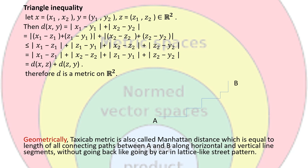Hence all the properties are satisfied, so d is a metric on R2, and this metric is known as the taxicab metric. Geometrically, this metric is also called the Manhattan distance, which equals the length of all connecting paths between two points a and b along horizontal and vertical line segments without going back — like traveling by car in a lattice-like street pattern. Thank you so much for watching my video; don't forget to subscribe to my channel.